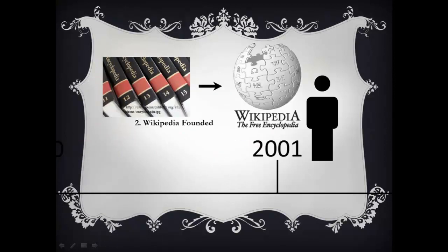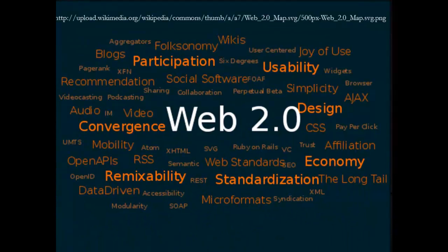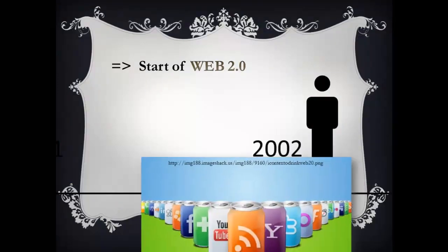In the same year, Wikipedia.org was launched. It is the largest online free encyclopedia. In 2002, there was the start of Web 2.0. It is a transformation from static to dynamic web pages and shareable content and networking.